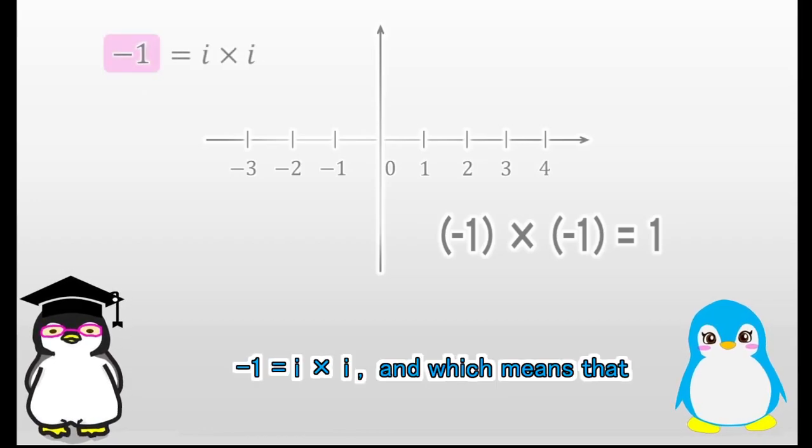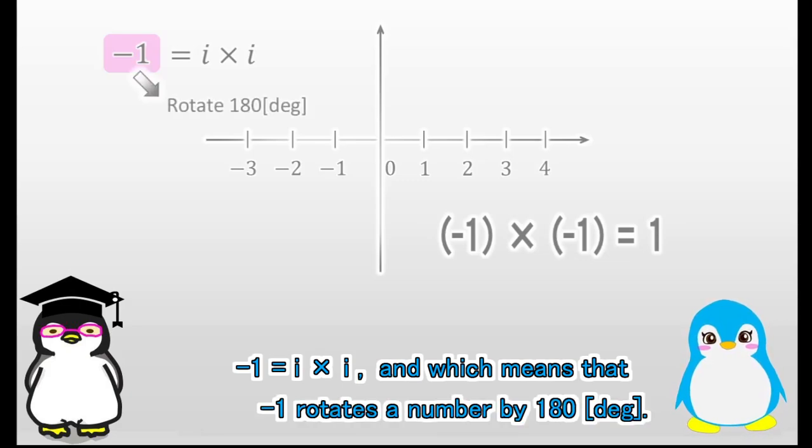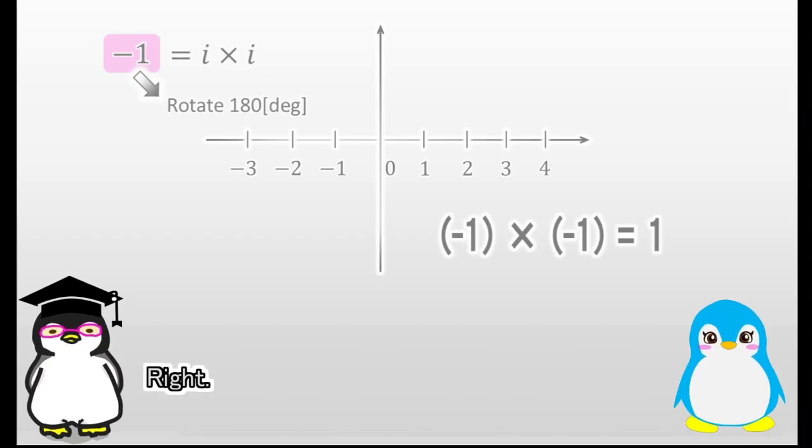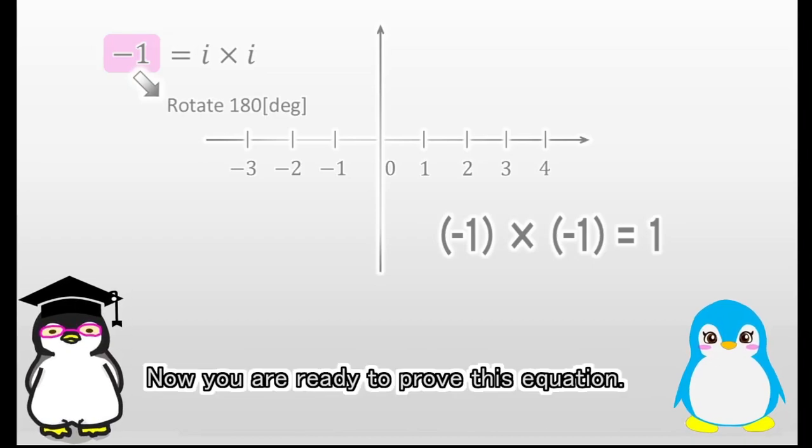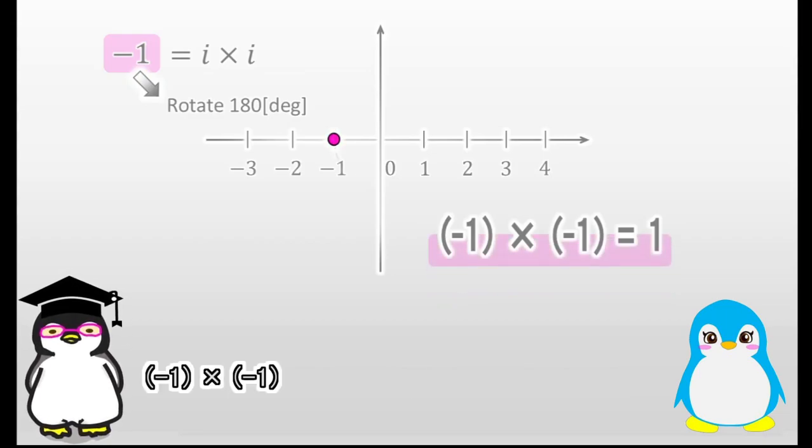Negative 1 is I times I, and which means that negative 1 rotates a number by 180 degrees. Right. Now you are ready to prove this equation. Negative 1 times negative 1 becomes positive 1.